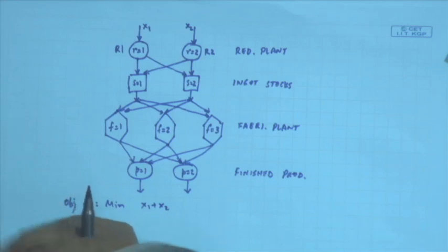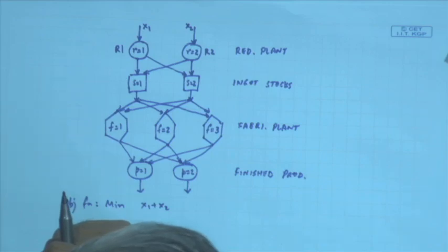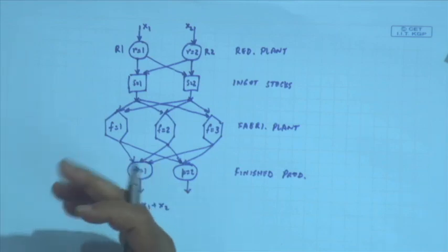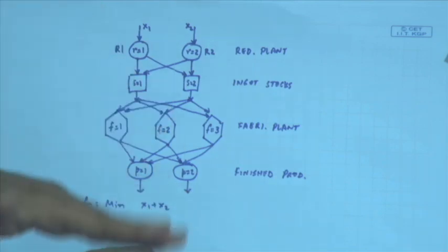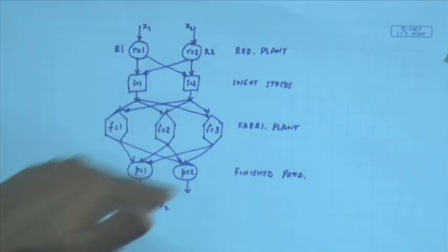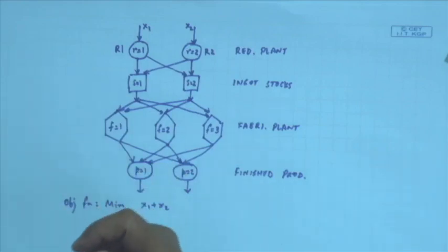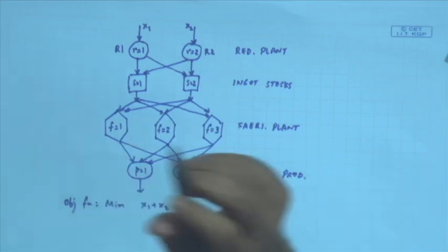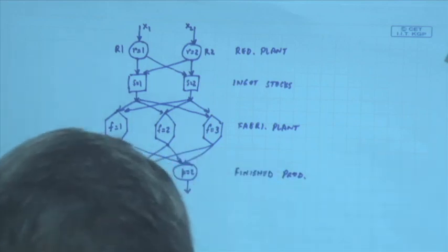Subject to the production and demand constraints stated below — A, B, C, D, E — these are the constraints given to us. In this problem the objective was easy and stated first, so I am writing that first and the constraints come after. Formulate the design optimization problem and transcribe it into standard nonlinear programming format, like we have done before.